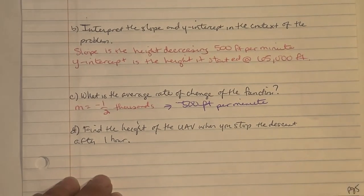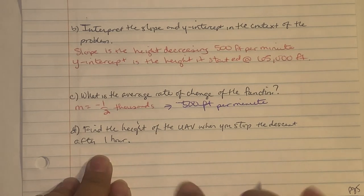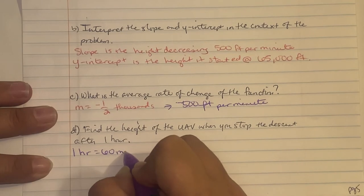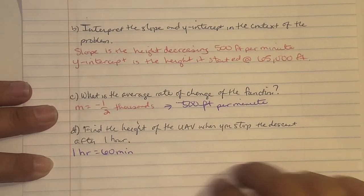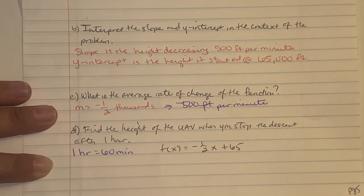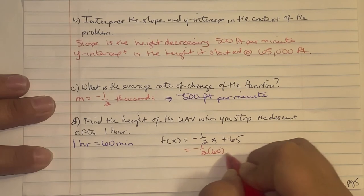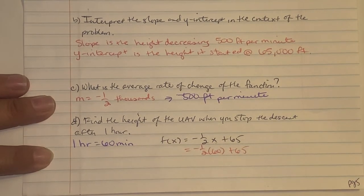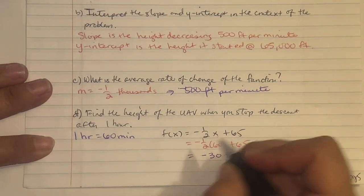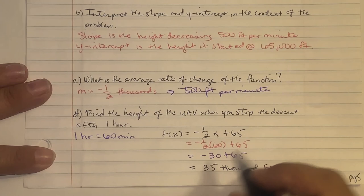Part d: Find the height after one hour. Since our equation is in minutes, one hour equals 60 minutes. Substituting x equals 60 into f(x) equals (-1/2)x plus 65: (-1/2)(60) plus 65 equals -30 plus 65 equals 35. The UAV is at 35,000 feet after one hour of descent.